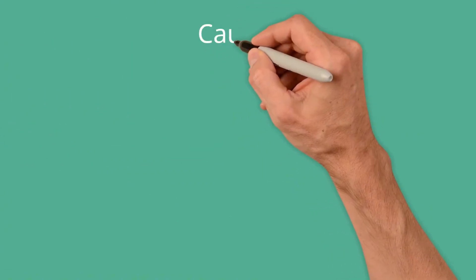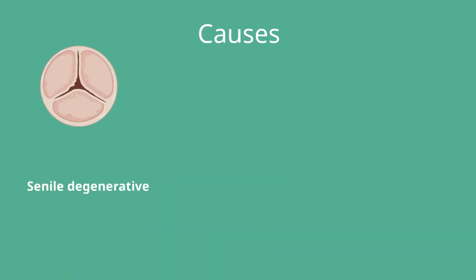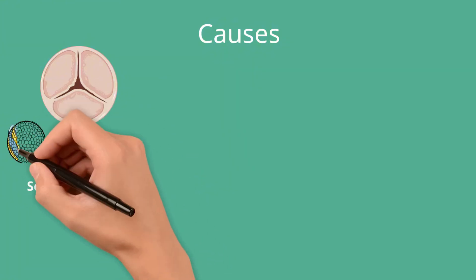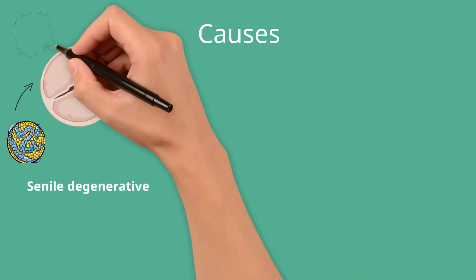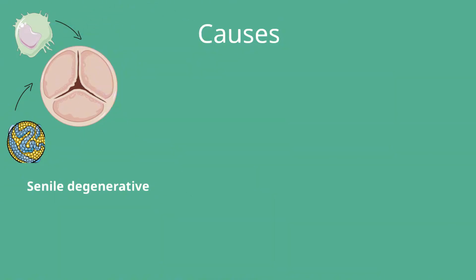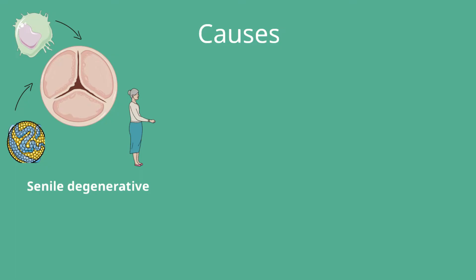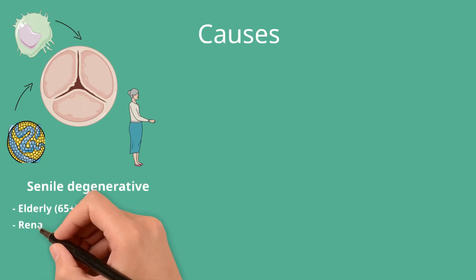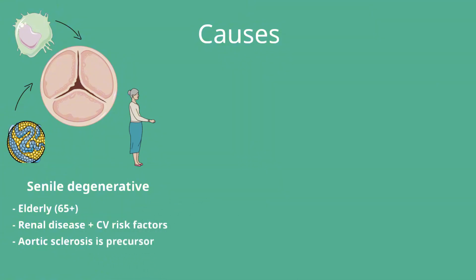The most common cause by far is senile degeneration of the aortic valve. The underlying pathophysiology involves endothelial dysfunction due to mechanical stress and lipid deposition, which can trigger an inflammatory response involving immune cell infiltration into the valve and subsequent thickening and calcification. It usually affects those over the age of 65. Risk factors are similar to conventional cardiovascular risk factors, including hypertension and hyperlipidemia, as well as chronic kidney disease. It is sometimes preceded by aortic sclerosis, which is a descriptive term for thickening of the valve without obstruction to flow.